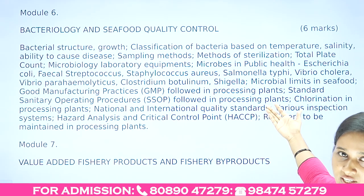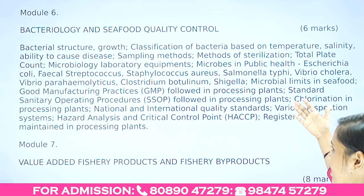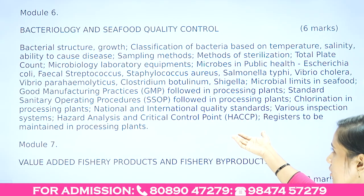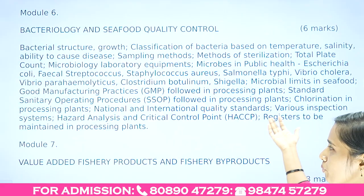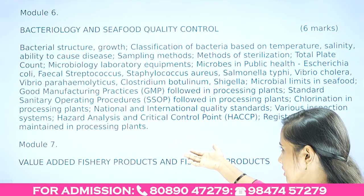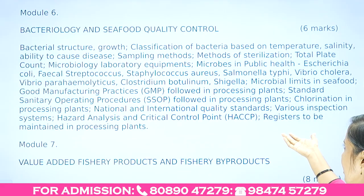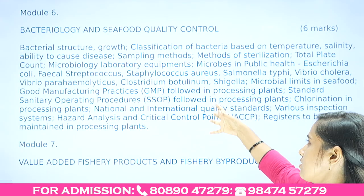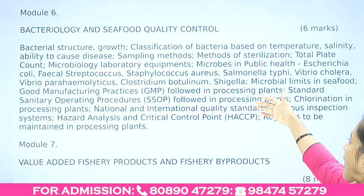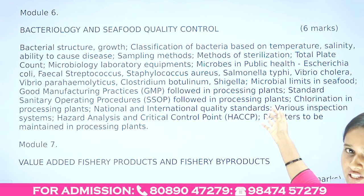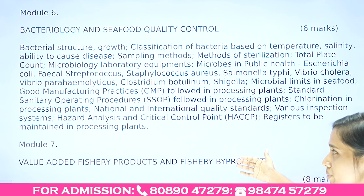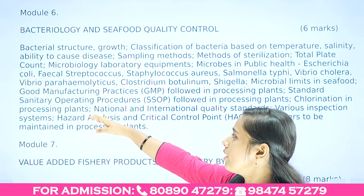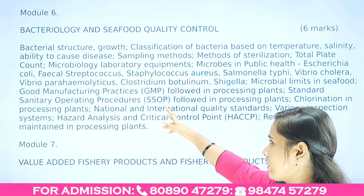Module 6 covers characteristics of specific microbes: E. coli, Fecal streptococcus, Staphylococcus aureus, Salmonella, Vibrio cholerae, Vibrio parahaemolyticus, Clostridium botulinum, and Shiga. Various microbial limits in seafood are also covered, along with seafood quality control and good manufacturing practices.